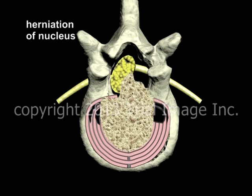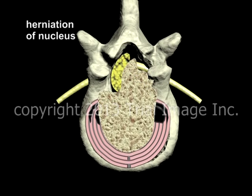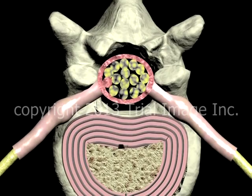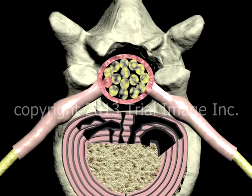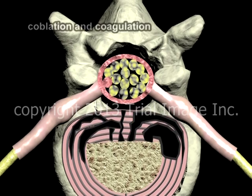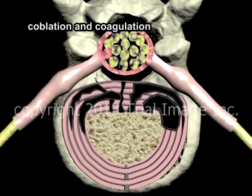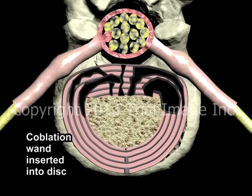This example shows a pretty extreme herniation with severe compression of the spinal cord. Symptomatic disc herniations generally require aggressive surgical treatment with complete removal of all disc material. Symptomatic bulging discs, however, may be treated more conservatively with a technique known as coblation and coagulation. Utilizing a radiological technique known as fluoroscopy, the coblation wand is guided through the back of the patient and inserted into the nucleus of the affected disc.